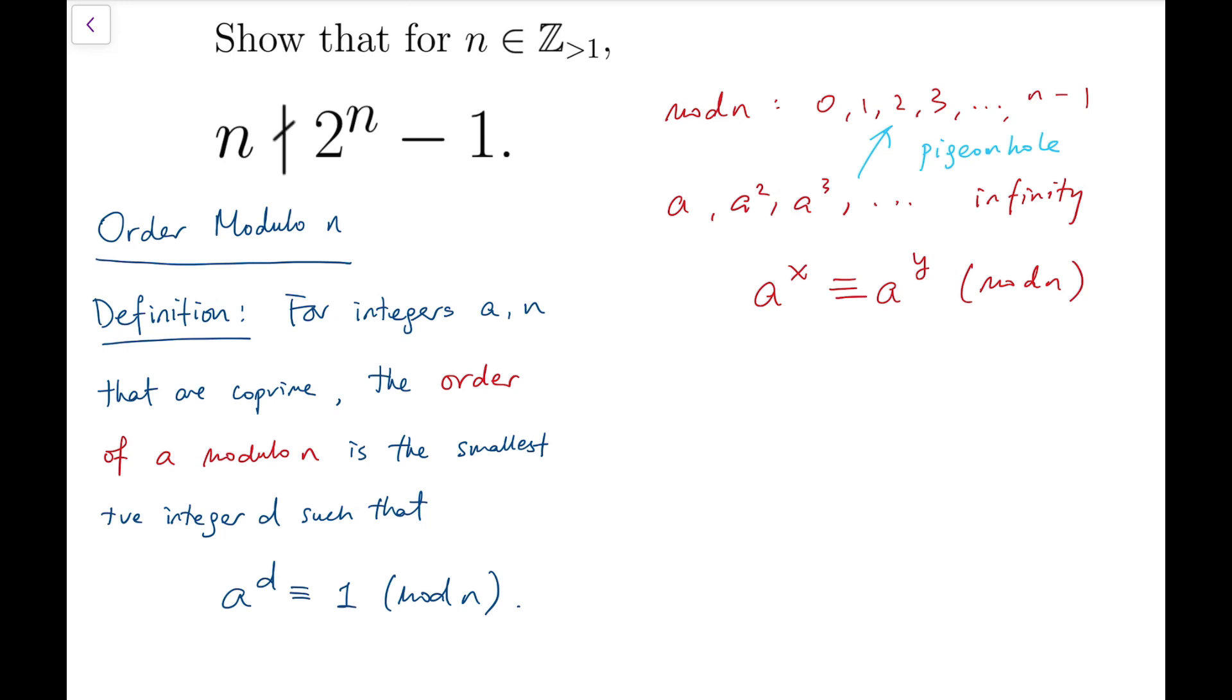Then by symmetry, maybe we can assume x is the larger one. Of course we assume that they are different. Now from this, we can say a to the power x minus a to the power y is congruent to zero mod n.